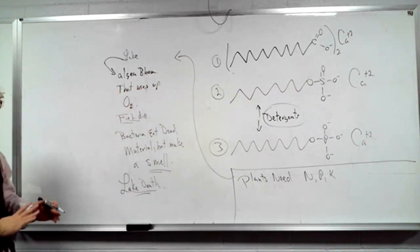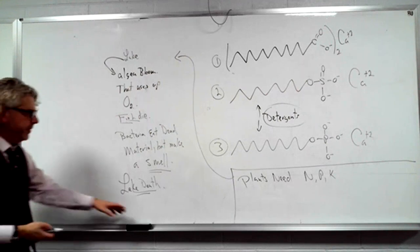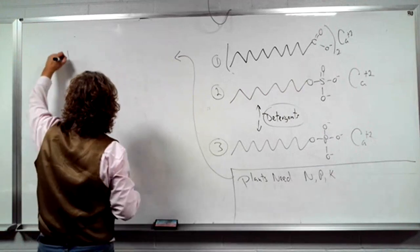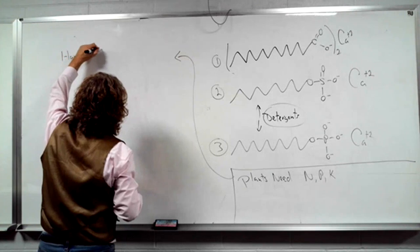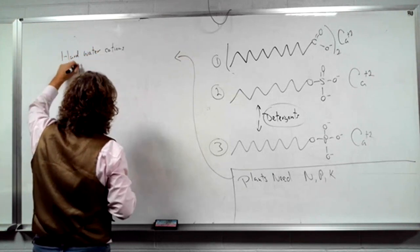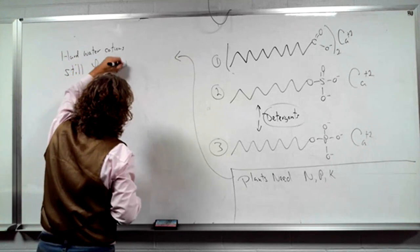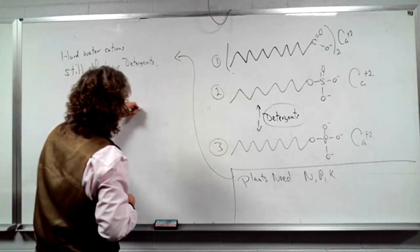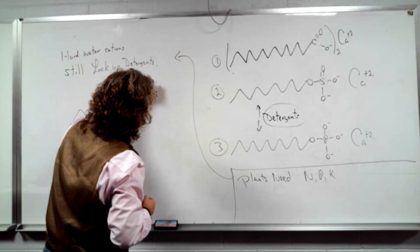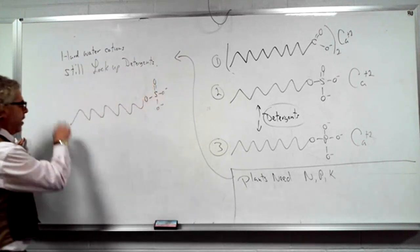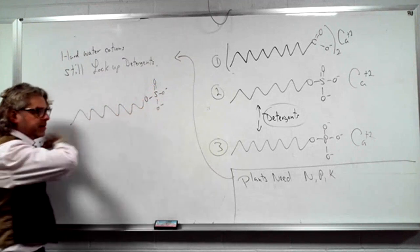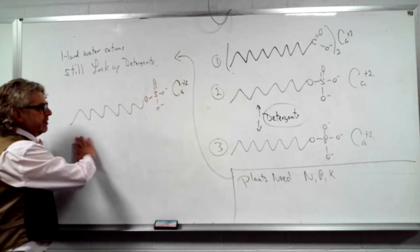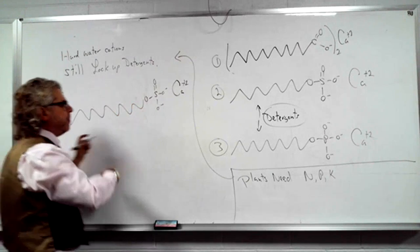Hard water cations still lock up detergents. If you have a detergent with SO₃²⁻, you want this to stick to oil and take the oil out of your clothes. If you have calcium²⁺, iron²⁺, or magnesium²⁺, it's going to render the detergent inactive — it binds.